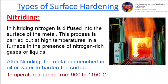Nitriding: nitrogen is diffused into the surface of the metal. This process is carried out at high temperatures in a furnace in the presence of nitrogen-rich gases or liquids. After nitriding, the metal is quenched in oil or water to harden the surface. Temperatures range from 900 to 1150 degrees Celsius.